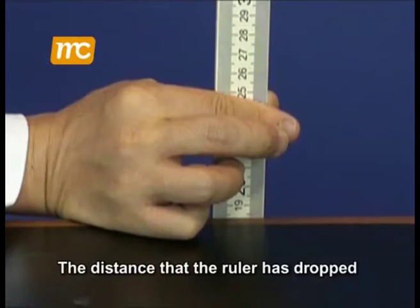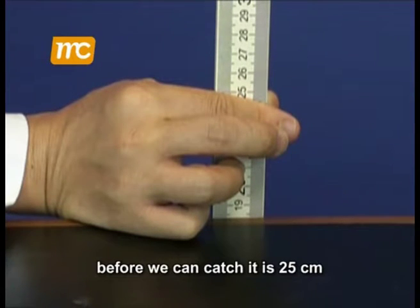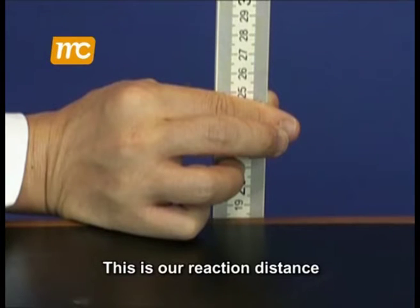The distance that the ruler has dropped before we can catch it is 25 cm. This is our reaction distance.